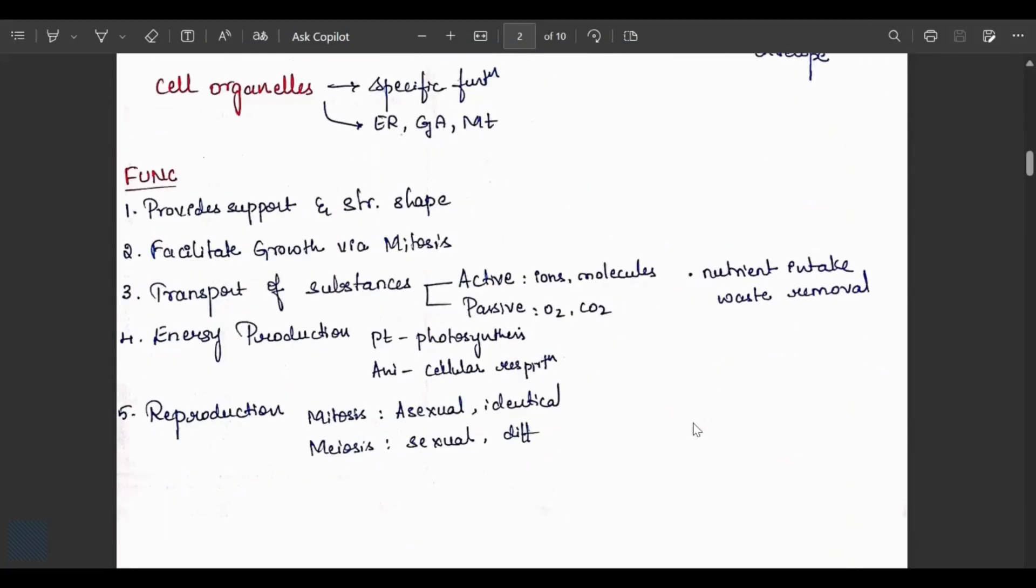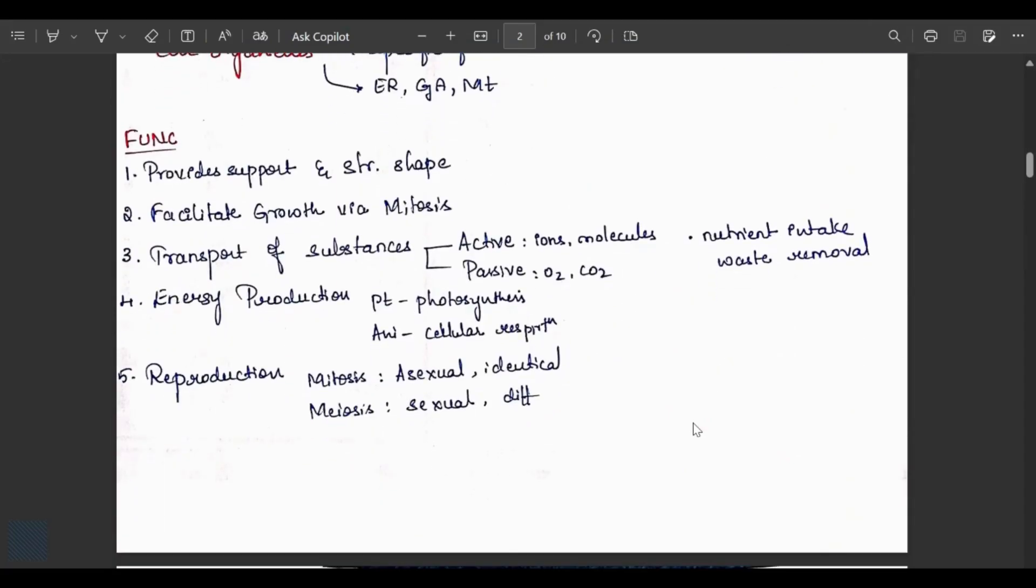Functions of cells: provides structure and shape, facilitates growth via mitosis, transport of substances including active transport of ions and molecules, passive transport of oxygen and carbon dioxide, nutrition intake by removing waste, energy production by photosynthesis in plants and cellular respiration in animals. Reproduction is of two types: mitosis, asexual reproduction giving identical cells, and meiosis, sexual reproduction giving different cells.